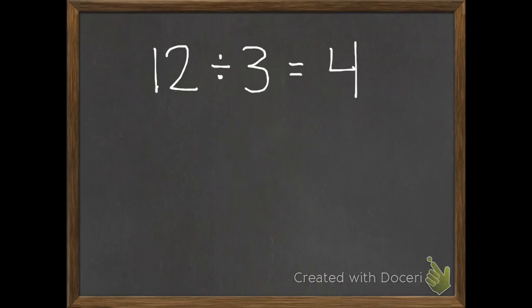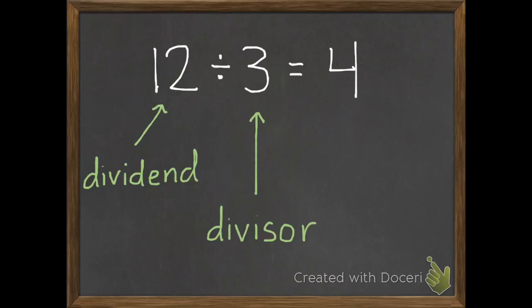For division, here are the different parts. The first number in our division problem is called the dividend. It's the total amount of things you have. Then we have our divisor. It's how many groups you're going to put each of these things into. And then the answer to a division problem is called the quotient. That's how many each group gets from the dividend.